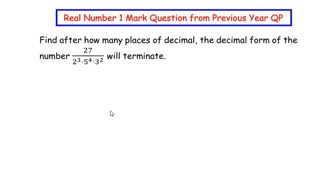Hello and welcome to my channel. In this video we are going to solve an example from real numbers, a one mark question from a previous year question paper. Find after how many places of decimal the decimal form of the number 27/(2³·5⁴·3²) will terminate. First, let us understand what are decimal places and terminating numbers.